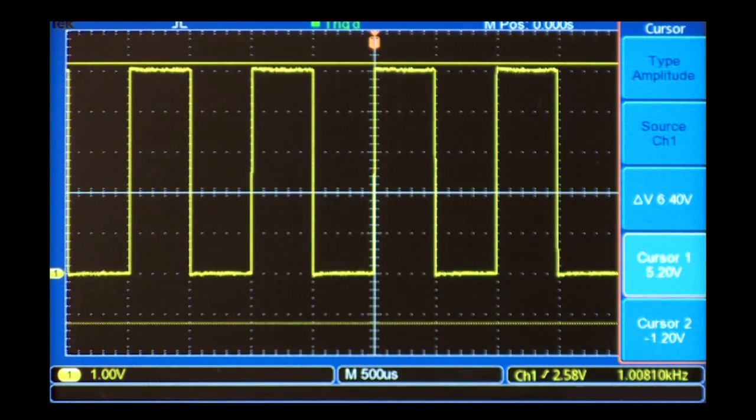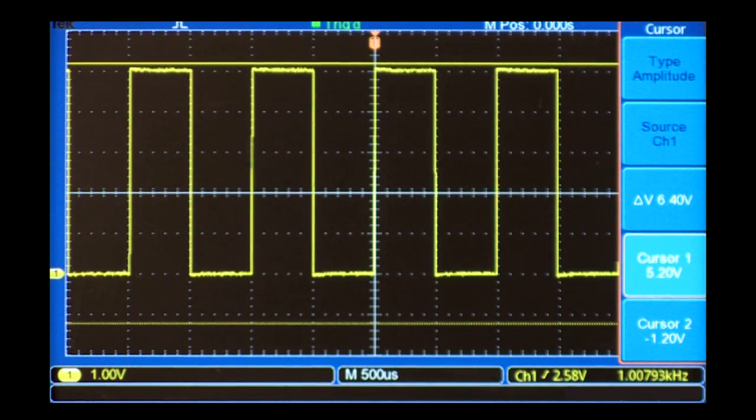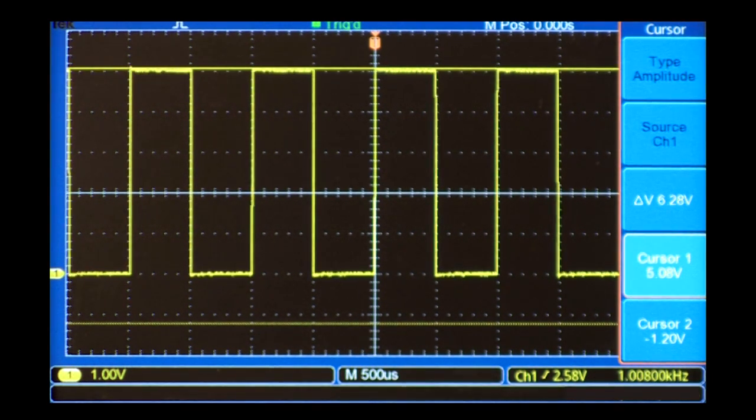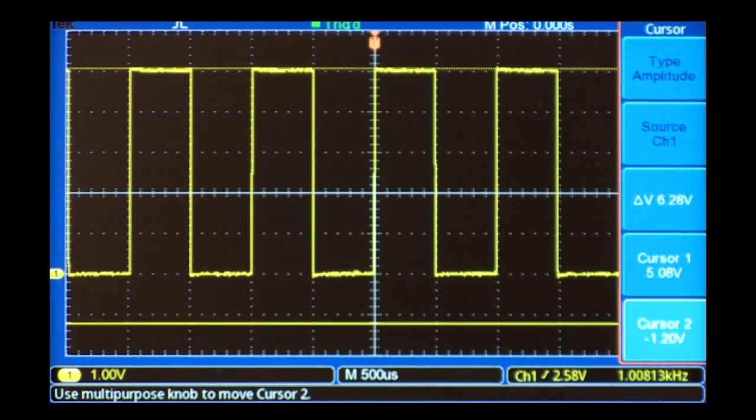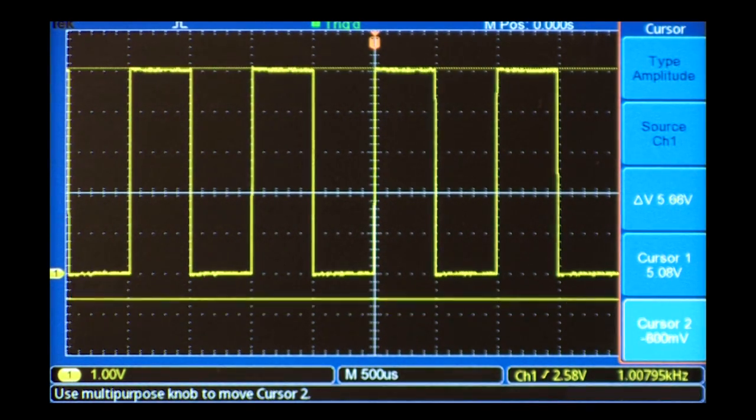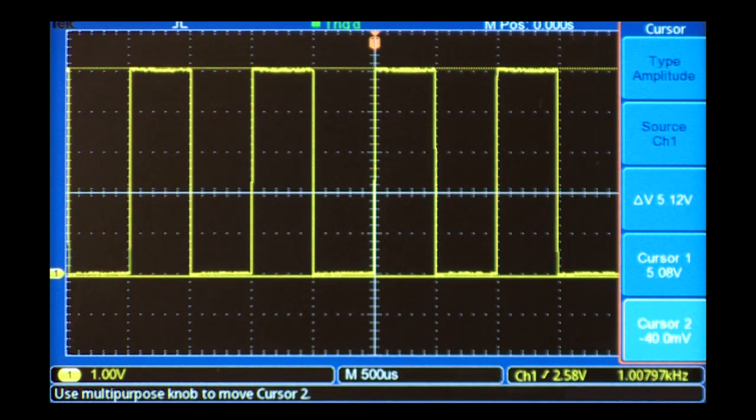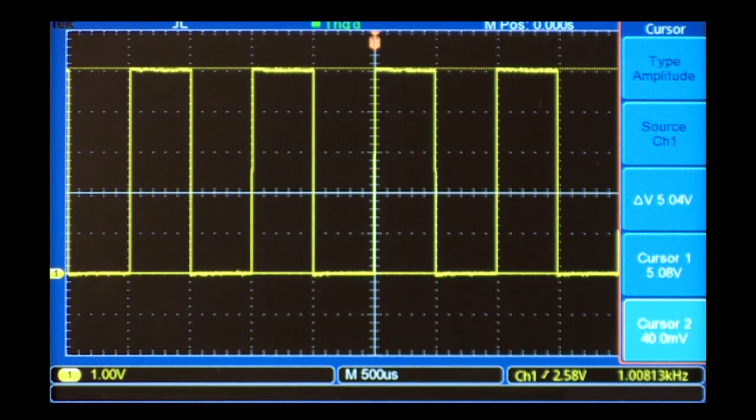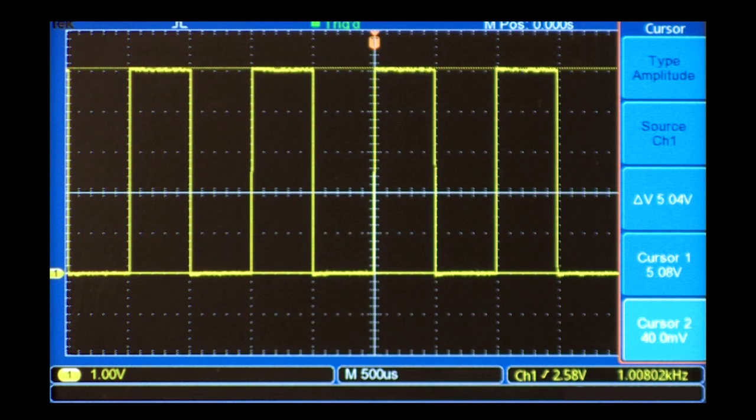We'll use both cursors to make the peak-to-peak measurement. I'll set the first one to the highest point of the waveform. Next, I'll position the second cursor on the lowest point. The delta-V measurement shows the voltage difference between the cursors. In this case, it's the 5 volts peak-to-peak voltage of the signal.